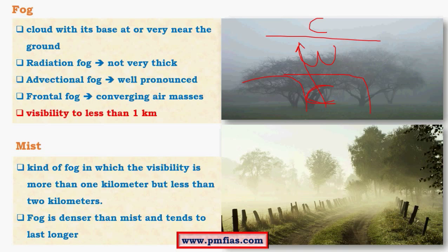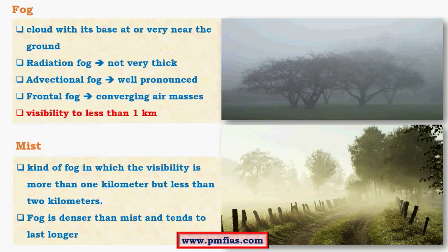One important point is that visibility in foggy regions is less than 1 km. Mist is another kind of condensation quite similar to fog except that visibility in mist is greater than 1 km and less than 2 km. Fog is denser than mist and tends to last longer because of temperature inversion. Fog usually occurs due to significant temperature inversion whereas mist doesn't need significant temperature inversion — it can occur along sloping surfaces where falling temperature is substantial. Mist doesn't last for long whereas fog lasts for a very long time.